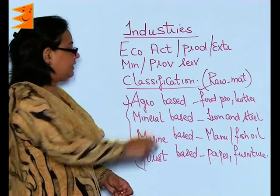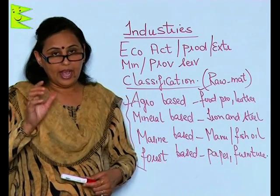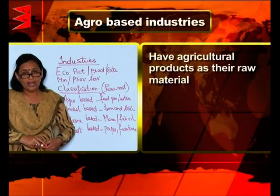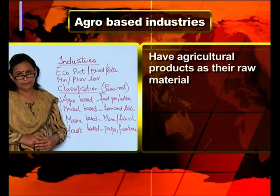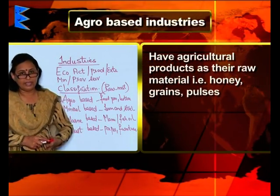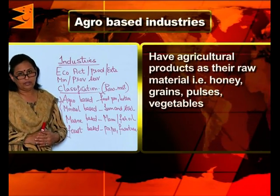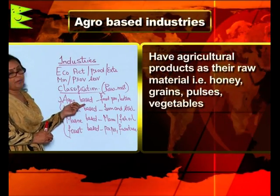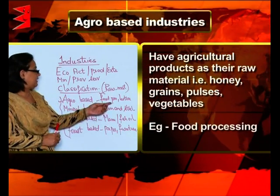The first is the agro-based industries. Agro-based industries are those industries which have agricultural products as their raw material — honey, grains, pulses, vegetables — all that comes directly from agriculture. An example can be the food processing industry or the leather industry.